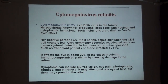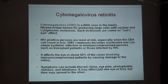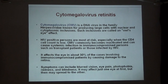Cytomegalovirus retinitis is one of the very dreadful conditions — an opportunistic infection which can occur in HIV patients. Cytomegalovirus is a DNA virus of the Herpesviridae family which produces cytopathic effects. HIV positive patients are at risk with lowered CD4 counts. Before the advent of HAART therapy, the incidence was as high as 30%, but with HAART treatment, the incidence has lowered.